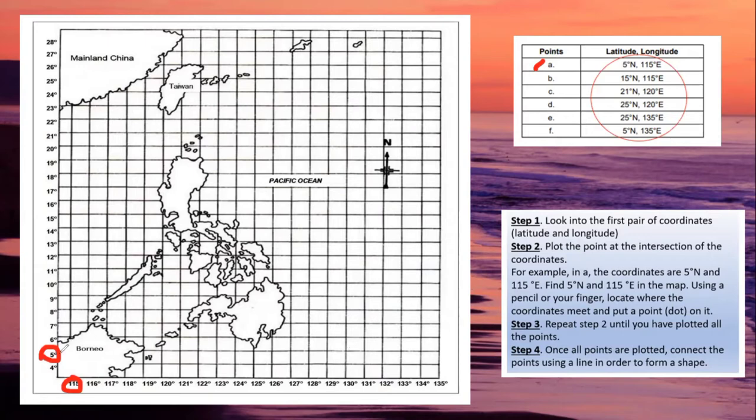So kung saan magtatagpo yung mga lines na yan, you can draw broken lines or imaginary lines para lang mapagtagpo nyo yan. And then here at 115. However, class, the exact point you'll place is at their intersection point. And in this case, where the first set of points met, 5 and 115, that's where you'll place the point. The green one.